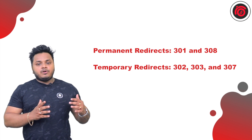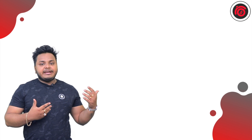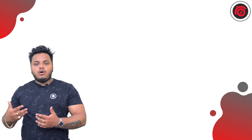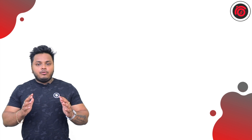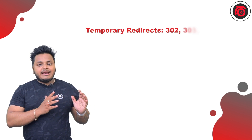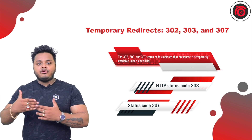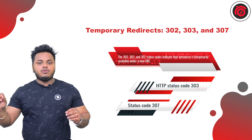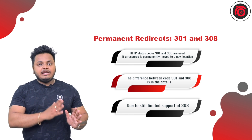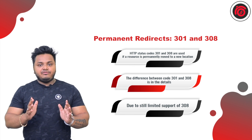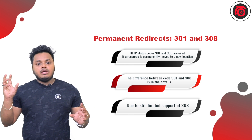Let us discuss what permanent and temporary redirection mean. Even though there are many technical differences — such as how GET or POST requests are handled between the user and the client side — to keep our discussion focused on SEO: a temporary redirection does not pass link juice, meaning it does not pass any SEO benefits from one URL to the other. Whereas a permanent redirection passes approximately 90%, or in some cases 100%, of the SEO benefits to the newly modified URL from its existing URL.